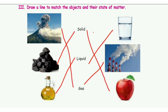Draw a line to match the object and their state of matter. First row: water — liquid. Second row: solid. Third row: liquid. The second match row is gas. The third row is solid.